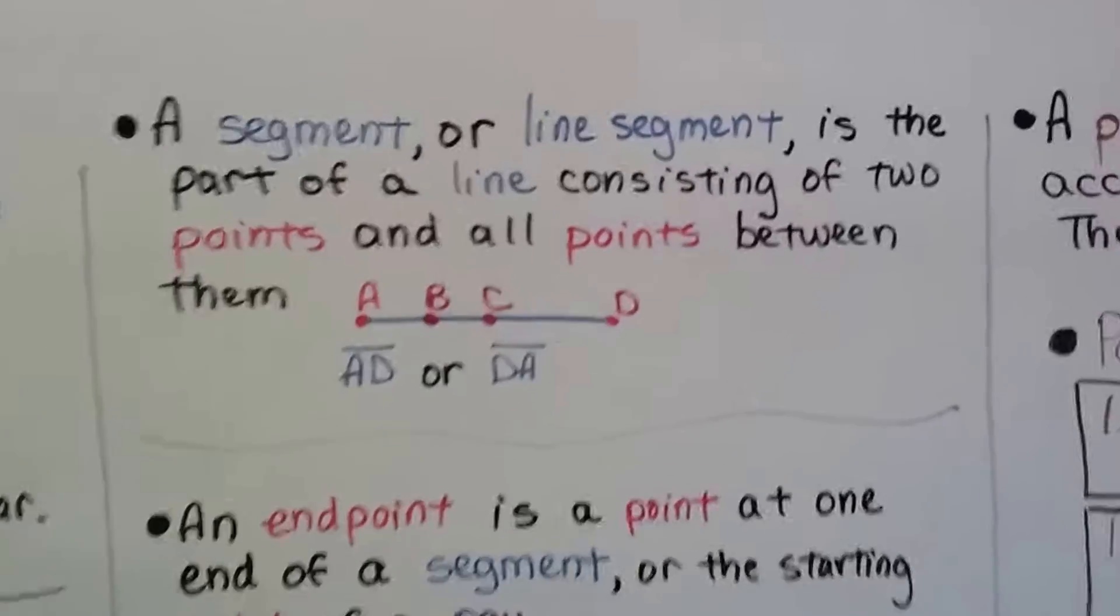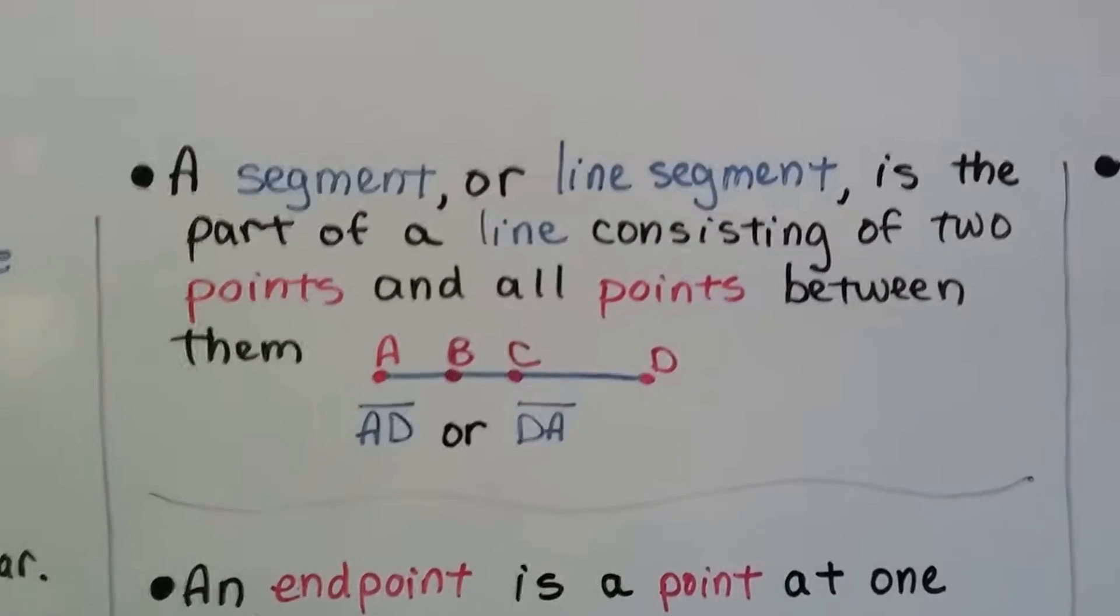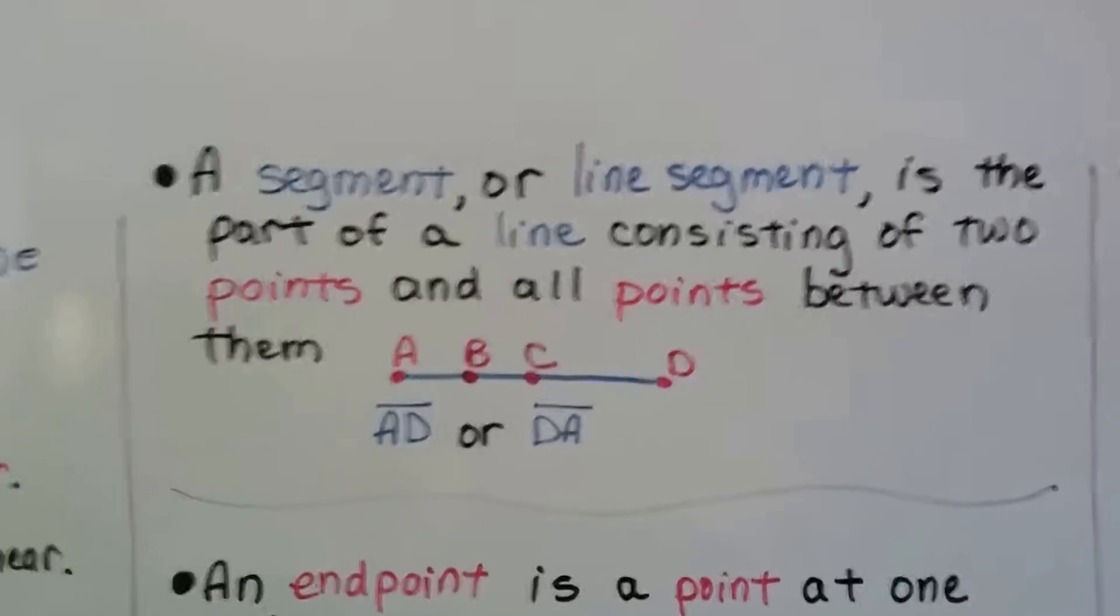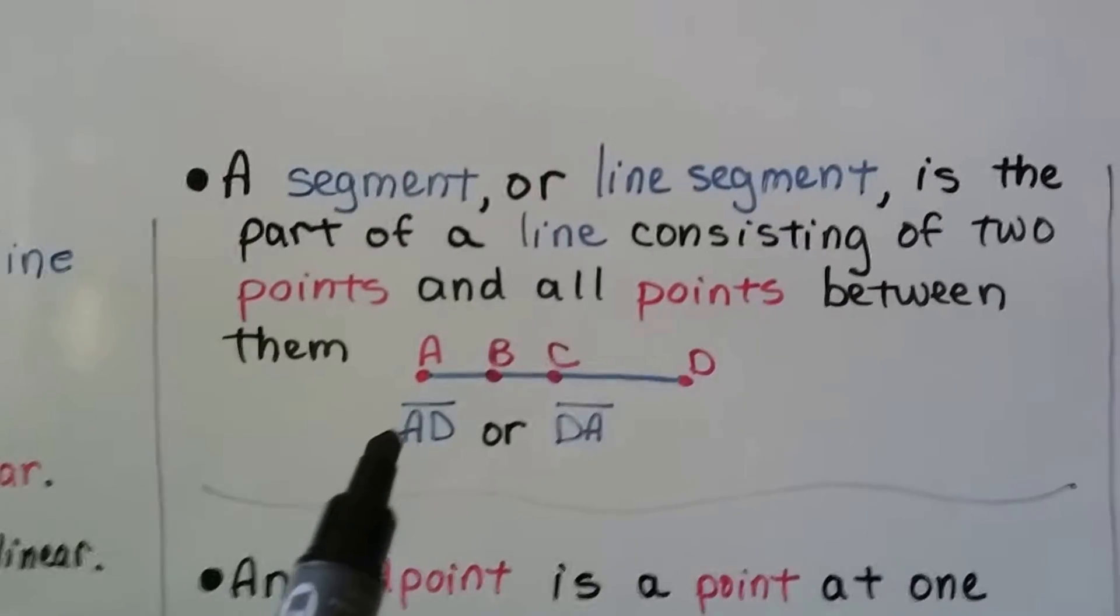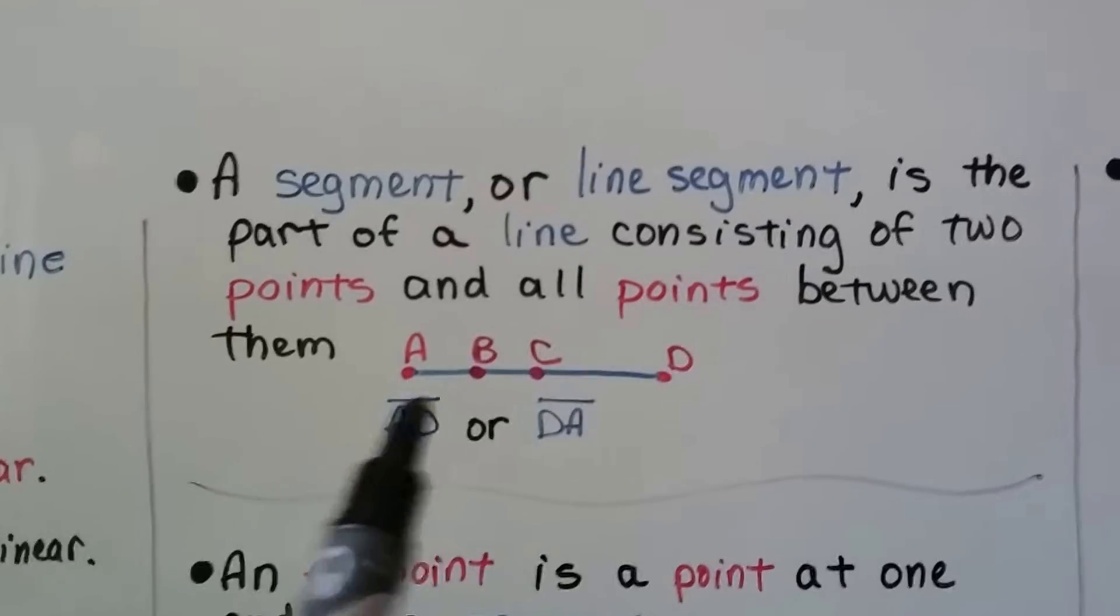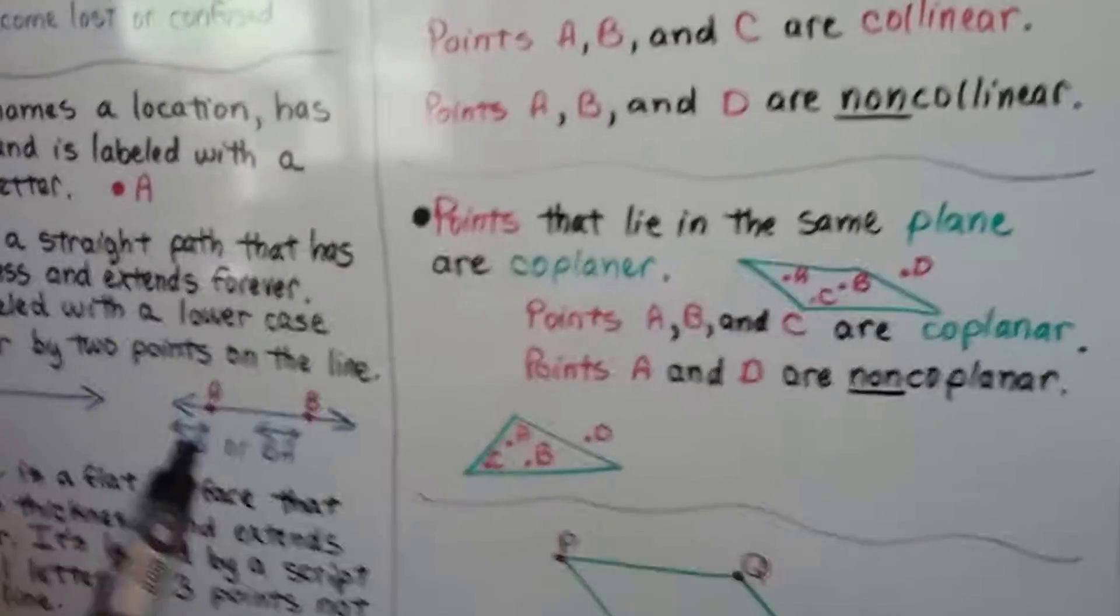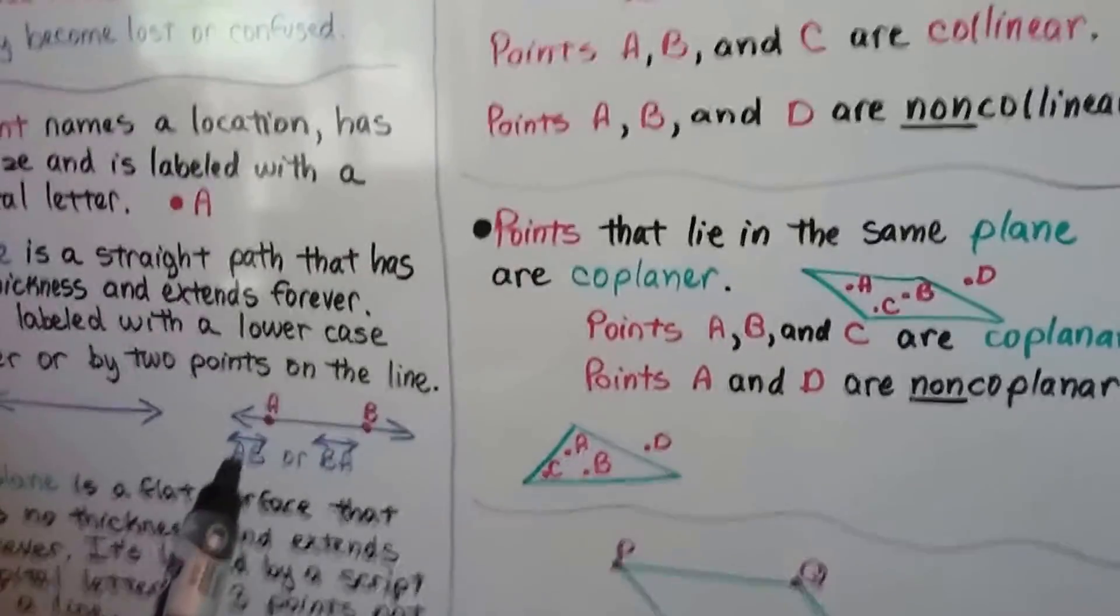A segment, or line segment, is the part of a line consisting of two points and all the points between them. This would be line segment AD. And see how it's just a straight line up here? We don't have the arrows on them like we did when we did the notation for line AB.